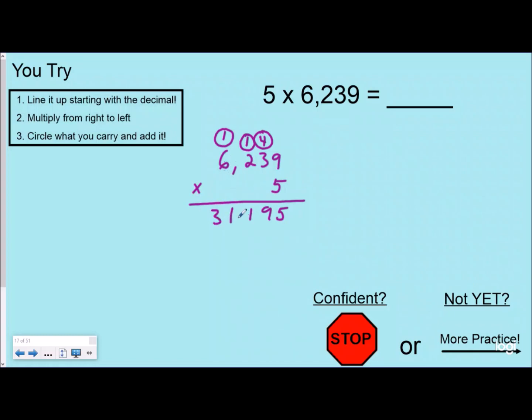Five times 6 is 30 plus 1 is 31, and then we can put our comma here, so our product would be 31,195. If you got that, you feel confident with your regrouping, you know what to do, go ahead and stop it and work on whatever your teacher would like you to work on. If you're not there yet, go ahead and keep watching for more practice.